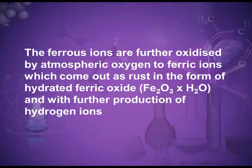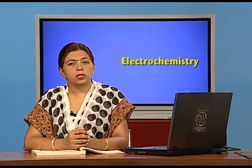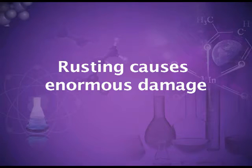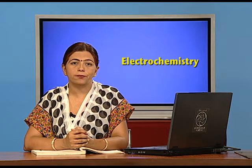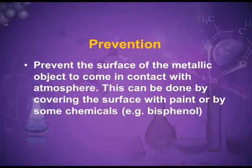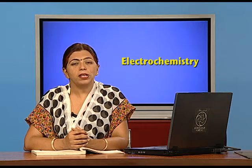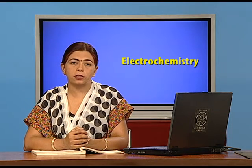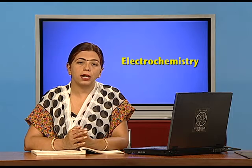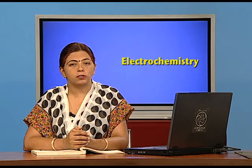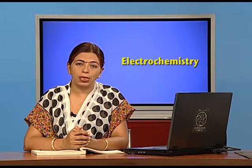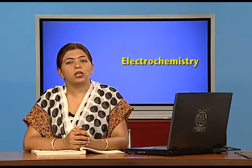Chemically, rust is Fe₂O₃·xH₂O. Since rusting causes enormous damage and can even cause accidents like bridge collapses, we must prevent it. The simplest method is to cut off the iron article from contact with air and water by applying paint or an oil coating. We can also use a chemical known as bisphenol.